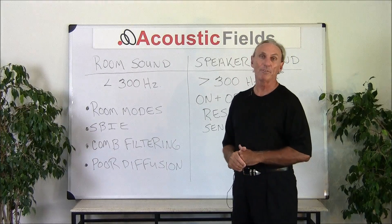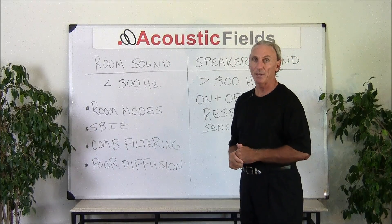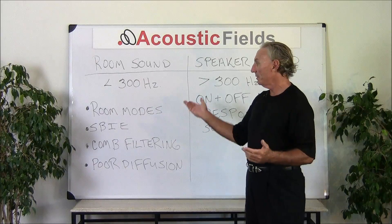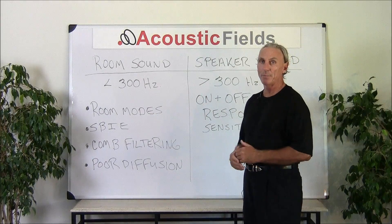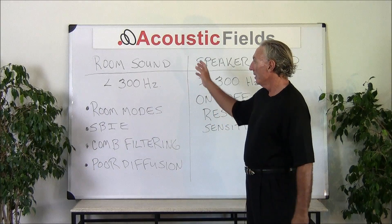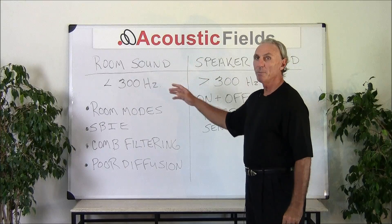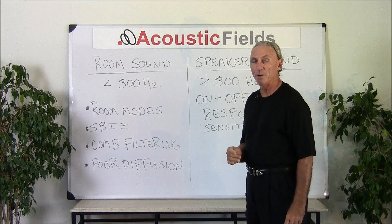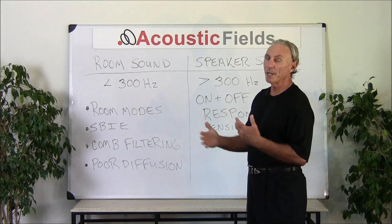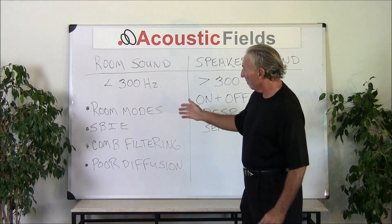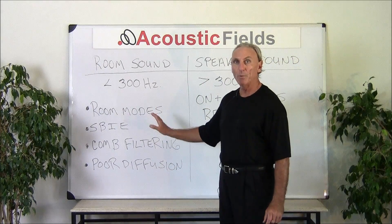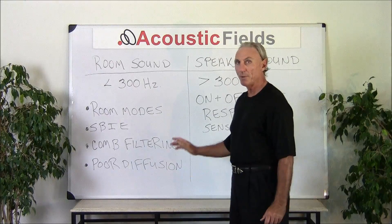Room sound is anything that's less than 300 cycles. You'll see different numbers in the literature but this is a good break point for energy below 300 cycles. So anything below 300 cycles in most of our small room acoustic environments, we're going to get some room sound. We're going to get room sound in four areas, but we'll get to those areas in a few minutes.